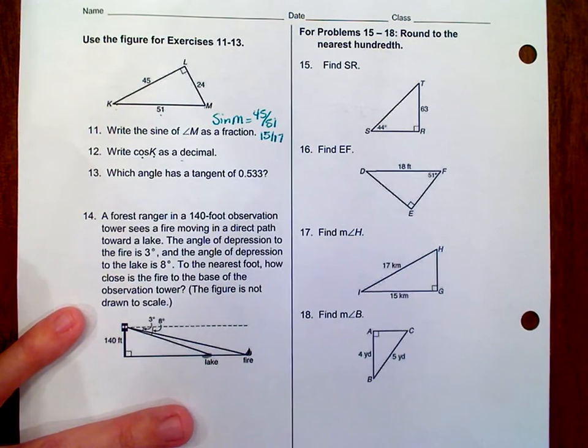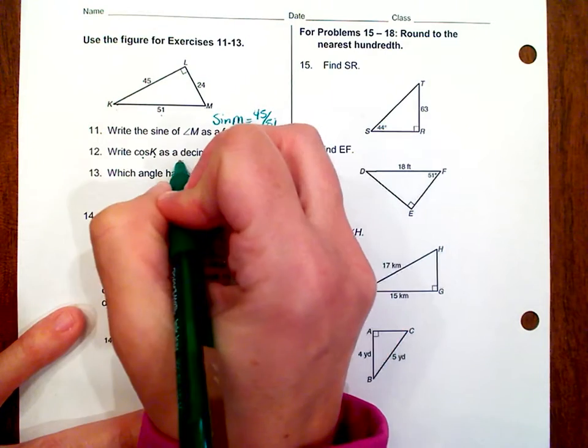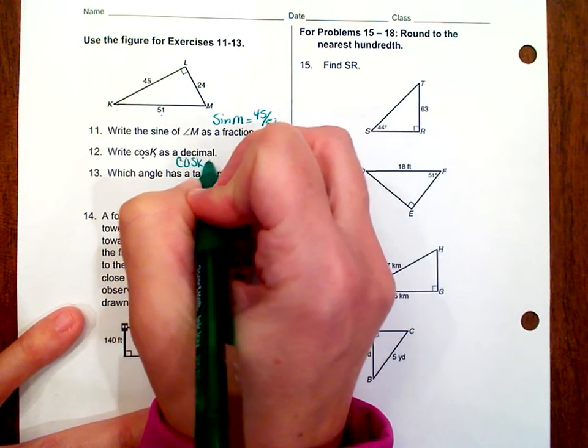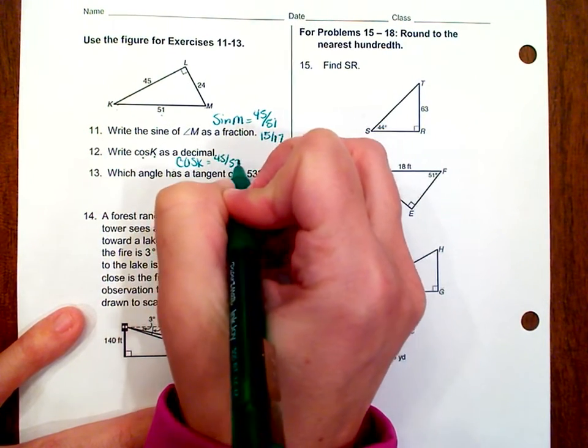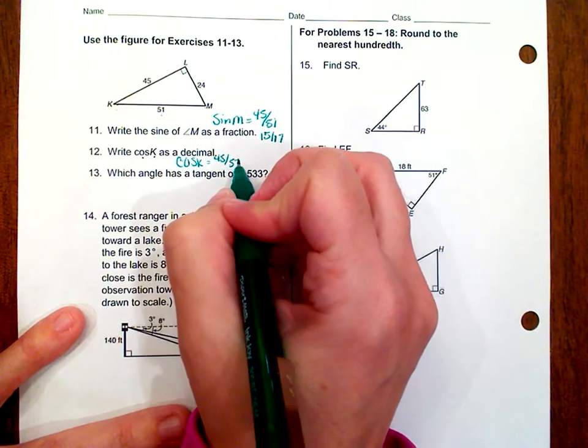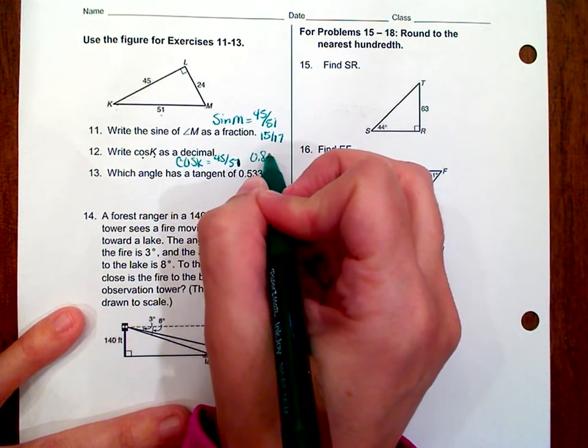So, when we divide 45 and 51, let me write this out. The cosine of K is 45 over 51. 51, not 57. And when you divide that, you get 0.882.